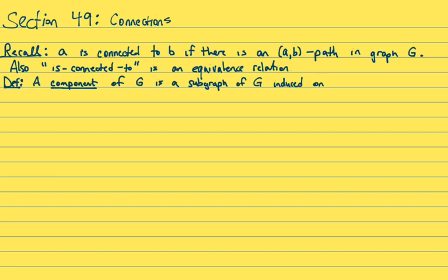So here's a definition. A component of G is a subgraph of G, meaning it's got a subset of the vertices and a subset of the edges that's induced by a set of vertices which make up an equivalence class of the is connected to relation on the vertex set of G. Now all of that's a very fancy but rigorous mathematical way of saying that the components of a graph are the parts of a graph made up of the vertices and edges of those vertices that are connected to each other.